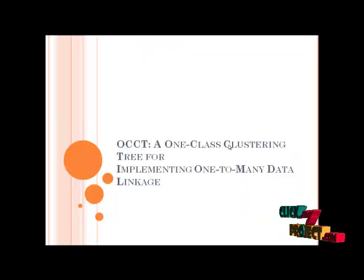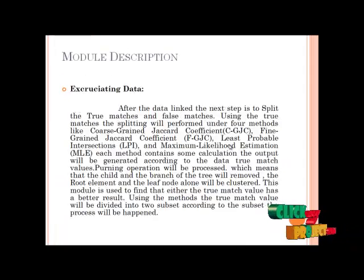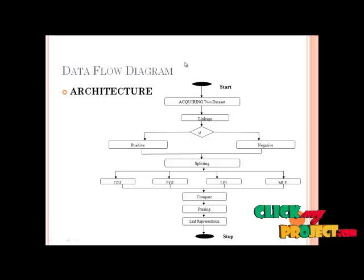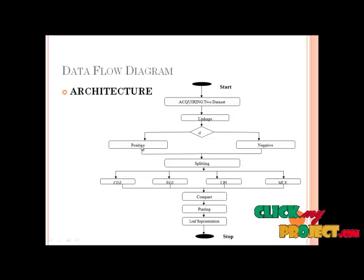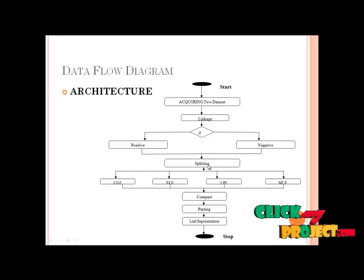Let's see the flow of our project. This is the architecture diagram. When data is acquired, it will be linked, and it can be separated into positive matches and negative matches. The positive matches and negative matches will be split using four criteria.